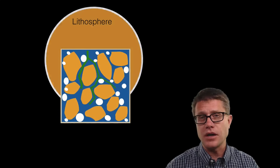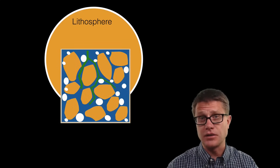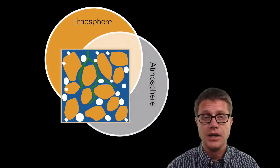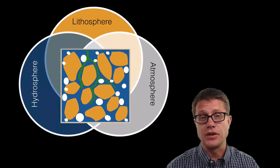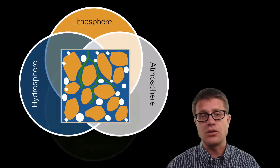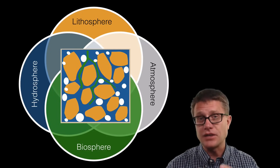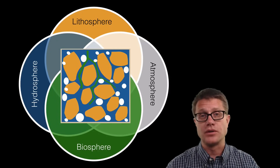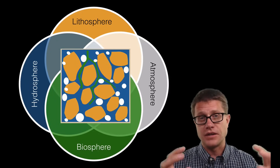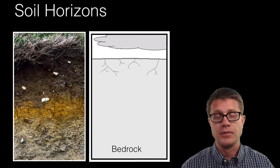If you think about it, what is soil? It is a coming together of the lithosphere, or the earth on our planet. It is also the air or the atmosphere and the hydrosphere. And then it is the biosphere, the living material. And so that is why soil is important — it is at this interface between all these different spheres on our planet.